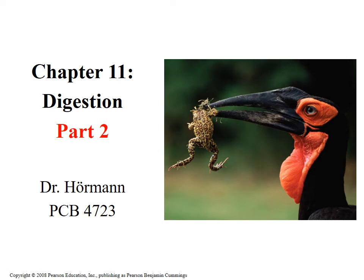We are back continuing our look at chapter 11 on the digestive system — this is part two. Last time, we finalized part one: we talked about specialized compartments in digestive systems, the specific flow of food through our GI tract, and the difference between mechanical and chemical breakdown and the enzymes involved. Now we'll continue by looking at salivary glands and how the nervous system controls food movement from point A to point B.